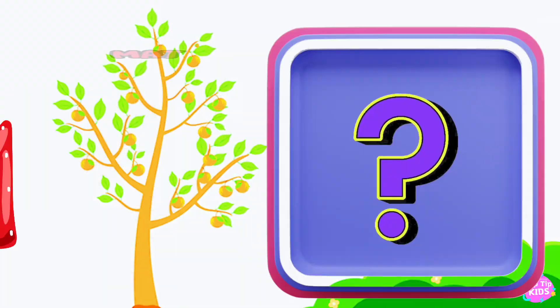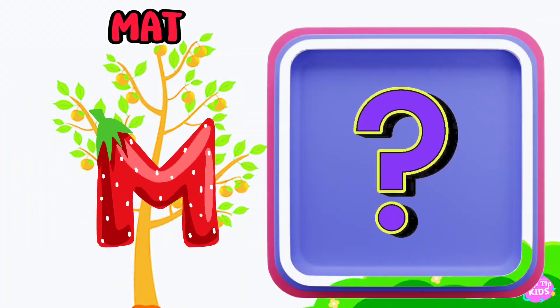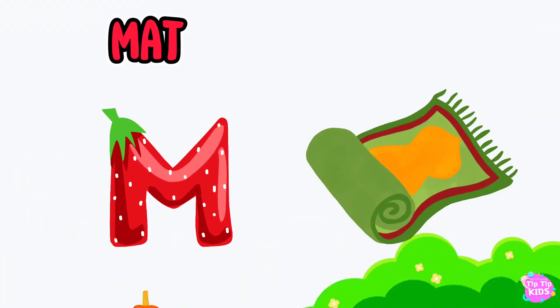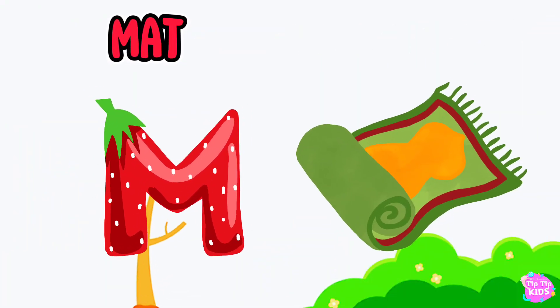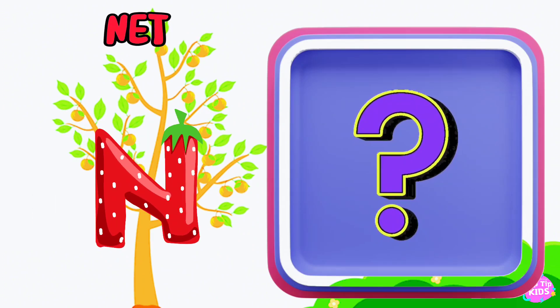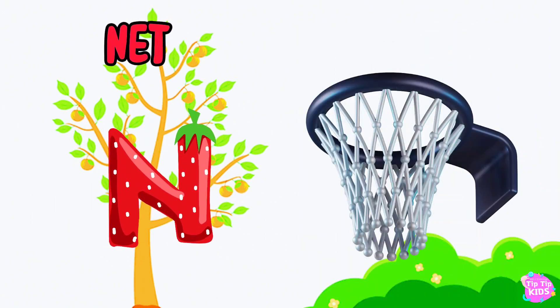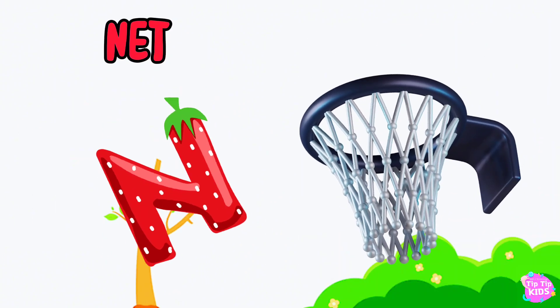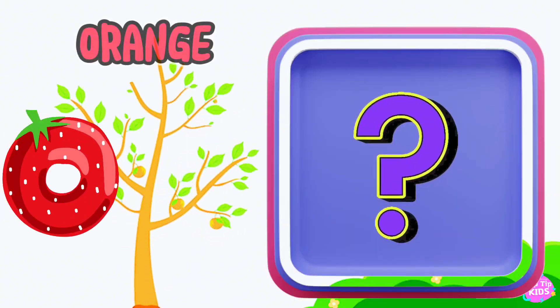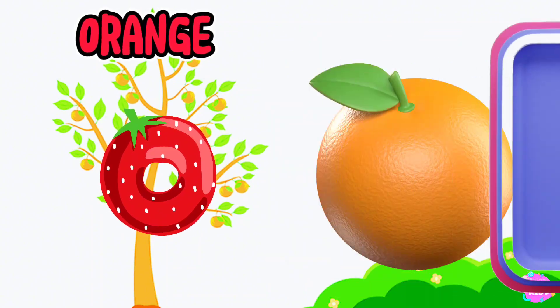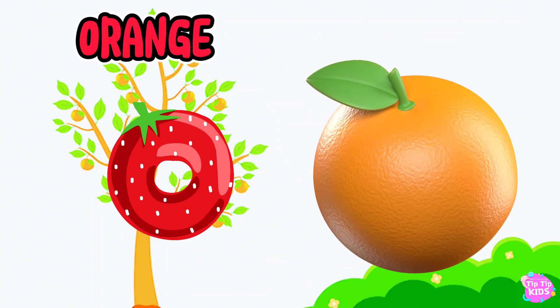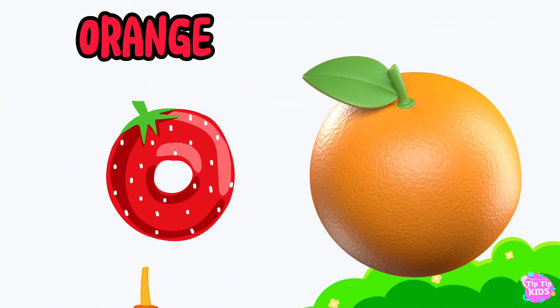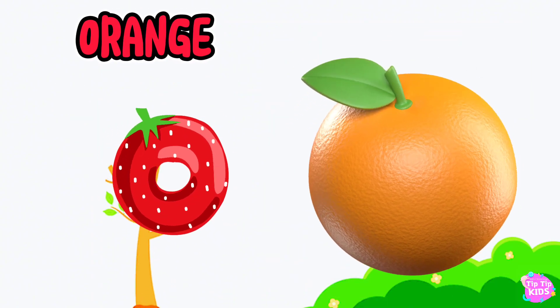M is for mat, m-m-mat. N is for net, n-n-net. O is for orange, o-o-orange.